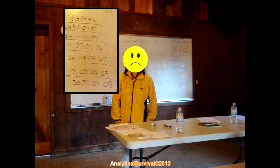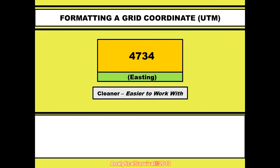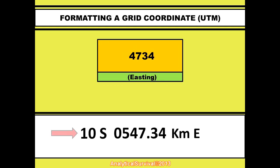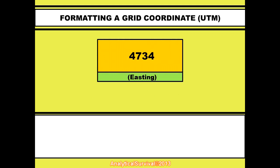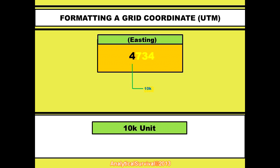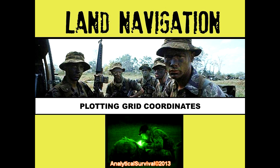Everyone in the class knew exactly what those sets of numbers signified, and by the end of this video you will too. This cleaned-up abbreviation is a lot easier to read and work with while on the ground. Would you rather work with the fully notated number or the abbreviated one? They both represent the exact same spot on your map. This format is cleaner and easier to work with. Unless otherwise specified, our coordinates will always begin in the 10k-meter place value, and from there we add place value denominations to the right depending on how accurate we want to get.